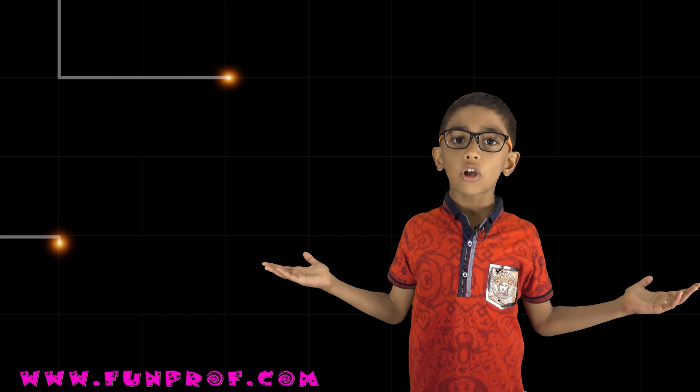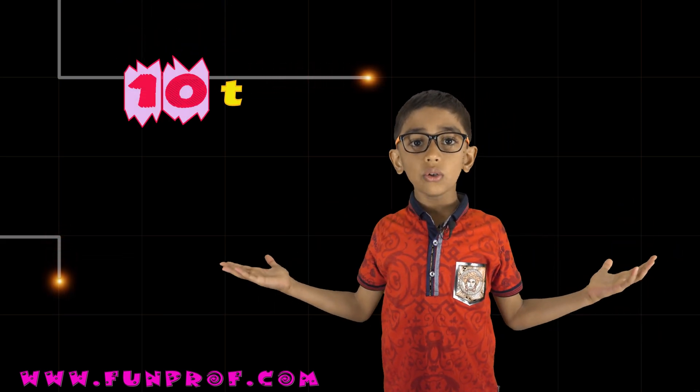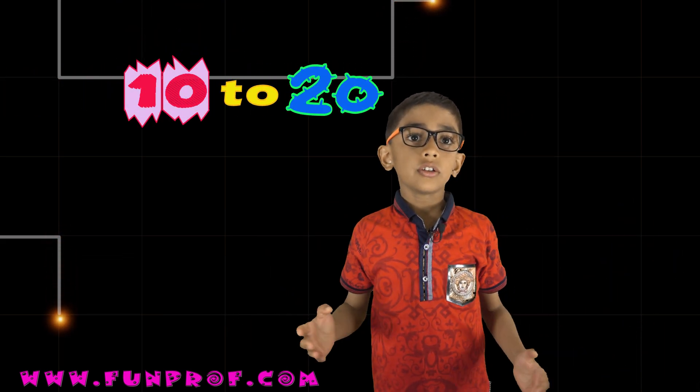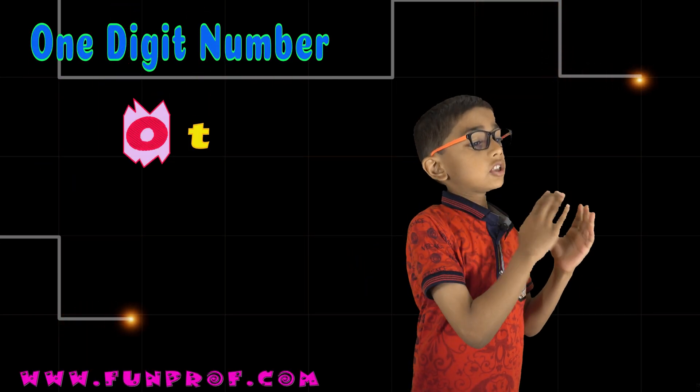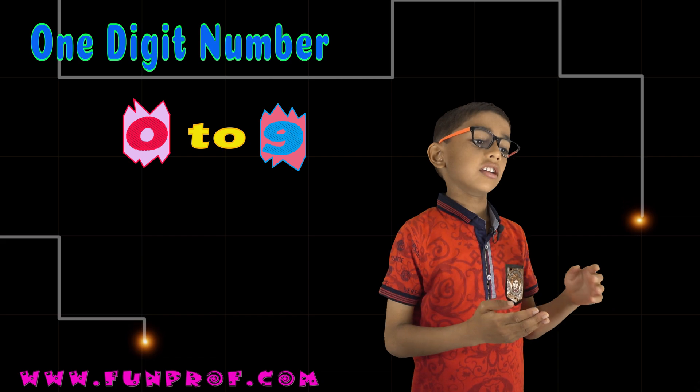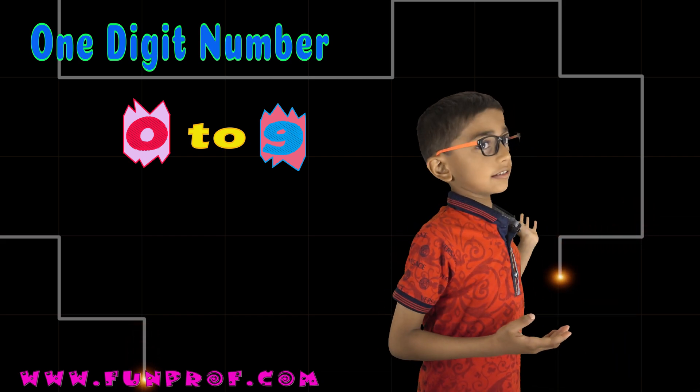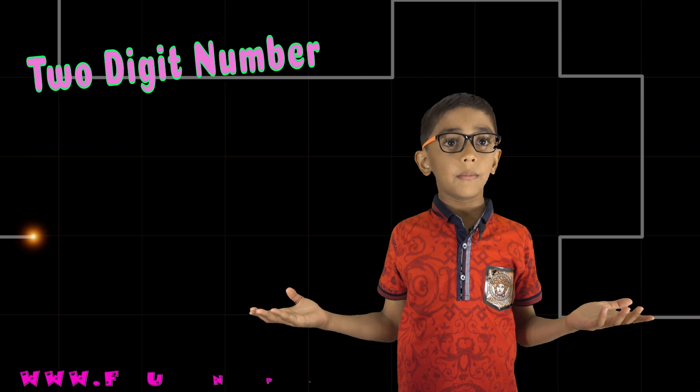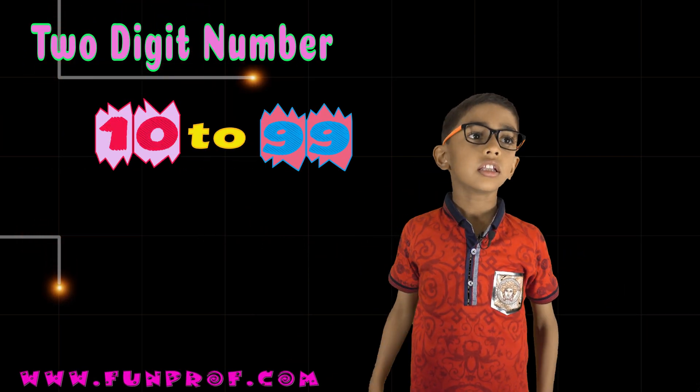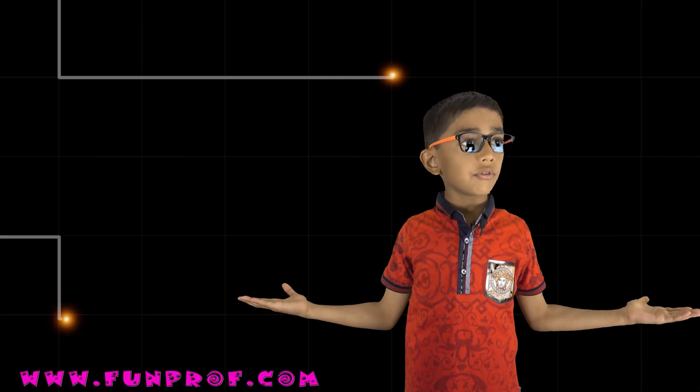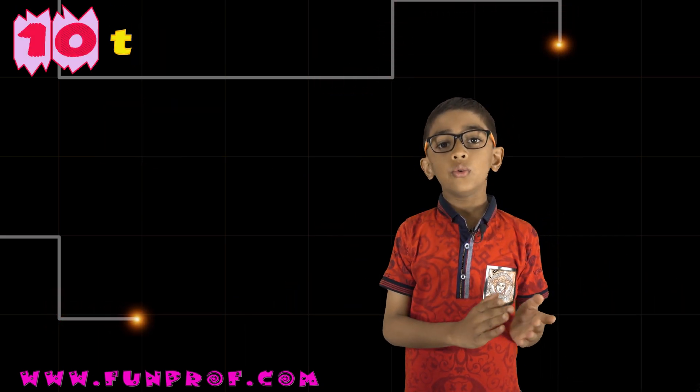Hello friends! Today our topic is numbers 10 to 20. One digit numbers are 0 to 9. We learned that in the previous class, and the two digit numbers are 10 to 99. But today we will only focus on numbers 10 to 20.